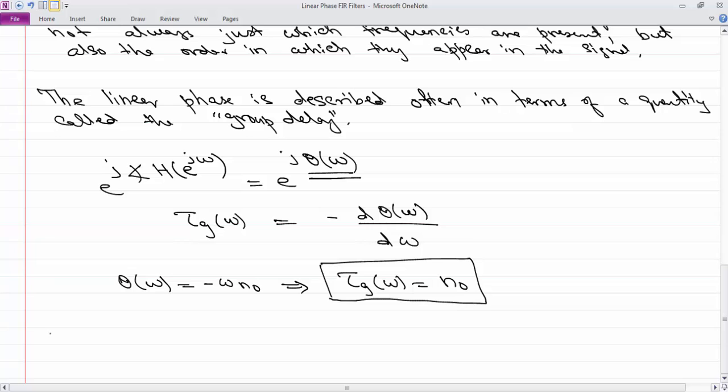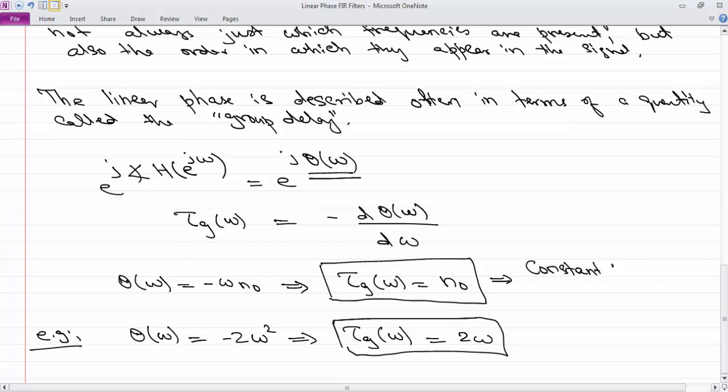So in the previous example when θ(ω) was -ωN₀, this means that the group delay is N₀. So what this says is that all of your frequencies are being delayed by the same amount which is a good thing. On the other hand, let's say that you had a filter whose θ(ω) was -2ω², so you compute the group delay and that comes out to be 4ω. What this means is that higher frequencies are being delayed more. So constant group delay is good, non-constant is bad. A constant group delay corresponds to linear phase.